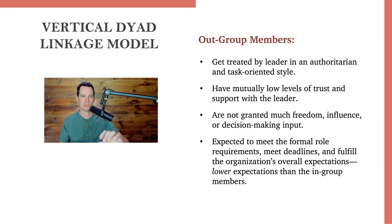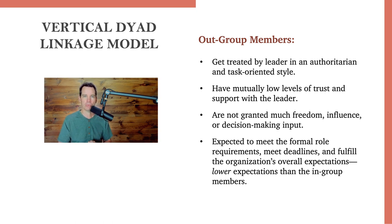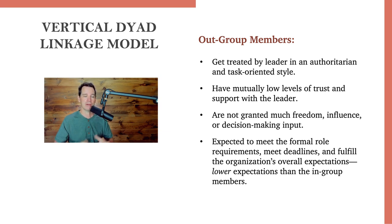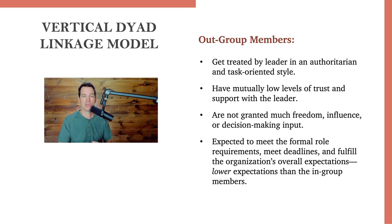Out-group members have a very different experience. They get treated by leaders in a typical authoritarian or task-oriented style — just a standard managerial approach. They have mutually low levels of trust and support, though that doesn't mean active distrust; it's just that the trust hasn't developed yet. They are not granted as much freedom or influence over decisions. Out-group members are expected to meet formal role requirements, deadlines, and the organization's overall expectations, but with lower performance expectations than in-group members.